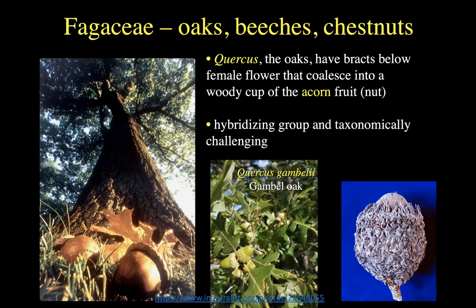Acorns from different species of oaks have been a very important source of food for indigenous Americans — they pound them into flour and leach water through it to remove the bad-tasting secondary compounds and turn it into a flour for making all kinds of edible things. Botanists are really challenged by this group; there are very fuzzy species limits. Oaks readily hybridize — a real challenge group — but I do love the Gambel oak.